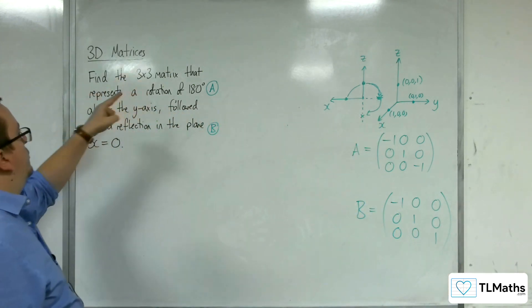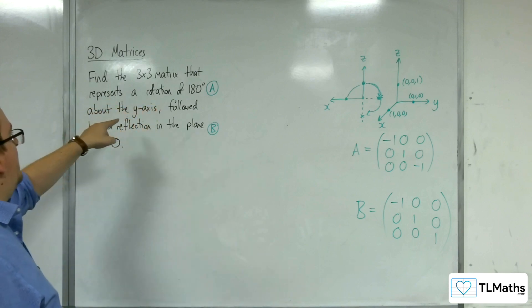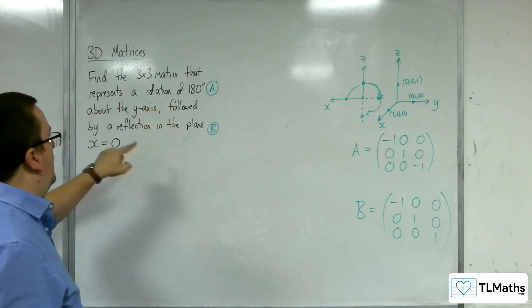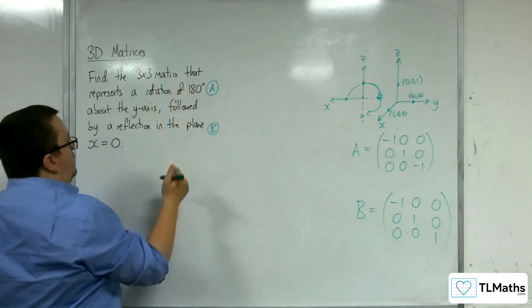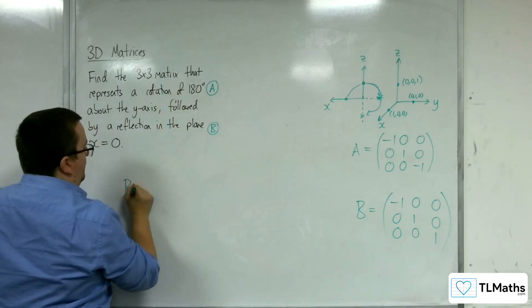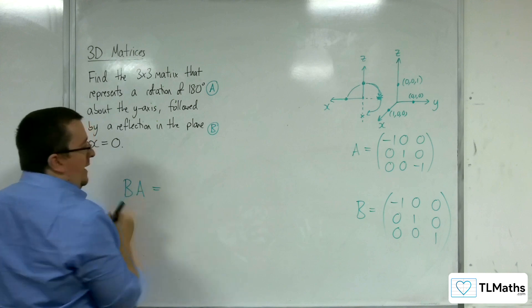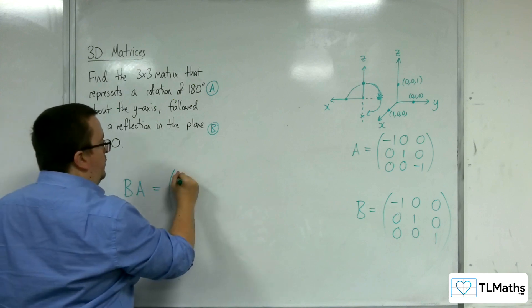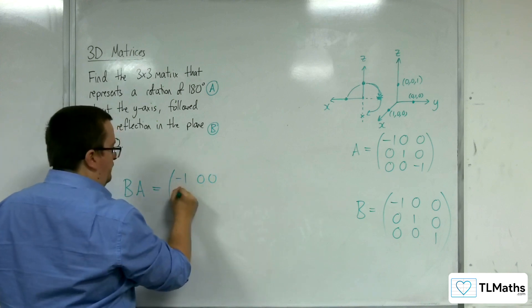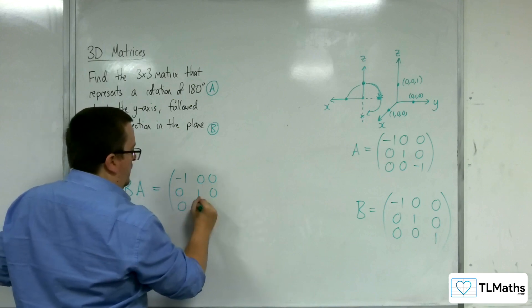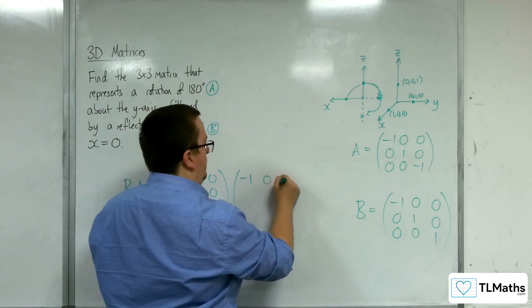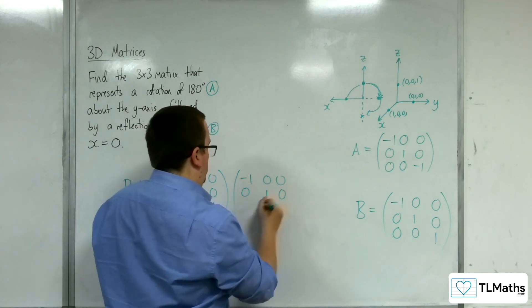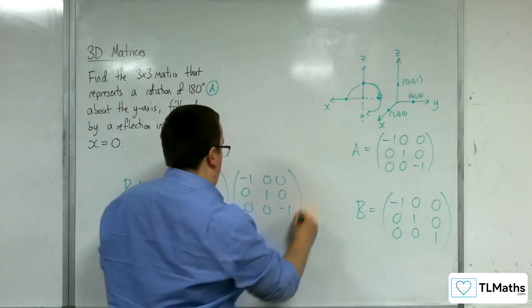So, find the 3 by 3 matrix that represents a rotation of 180 degrees about the y-axis, followed by a reflection in the plane x equals 0. So, A is then followed by B. So, I need to find B times A. Now, you can do this on your calculator. Okay. Now, I'm going to do it straight off the bat because it's not going to be too hard. He says. Hopefully, you don't get it wrong now. Okay.